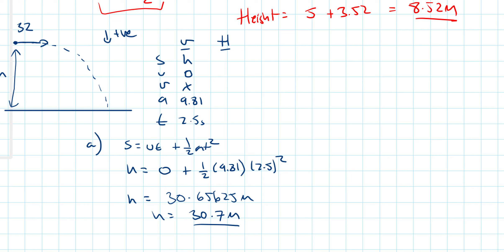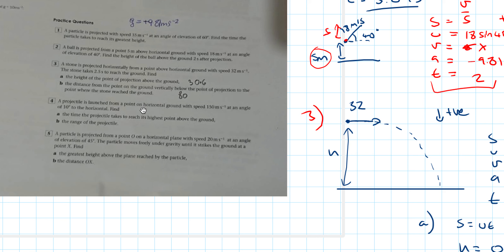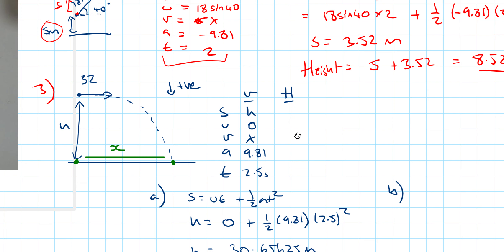For part b, we need the horizontal distance — the distance from the point on the ground vertically below projection to where the stone lands. It is asking for the horizontal distance x. So we now look at the horizontal SUVAT. s equals x, and initial horizontal speed is 32 metres per second.